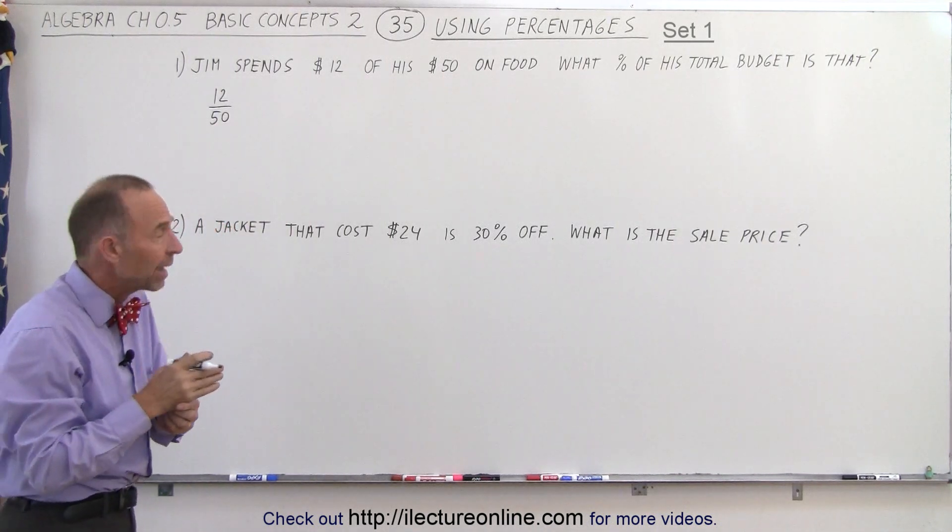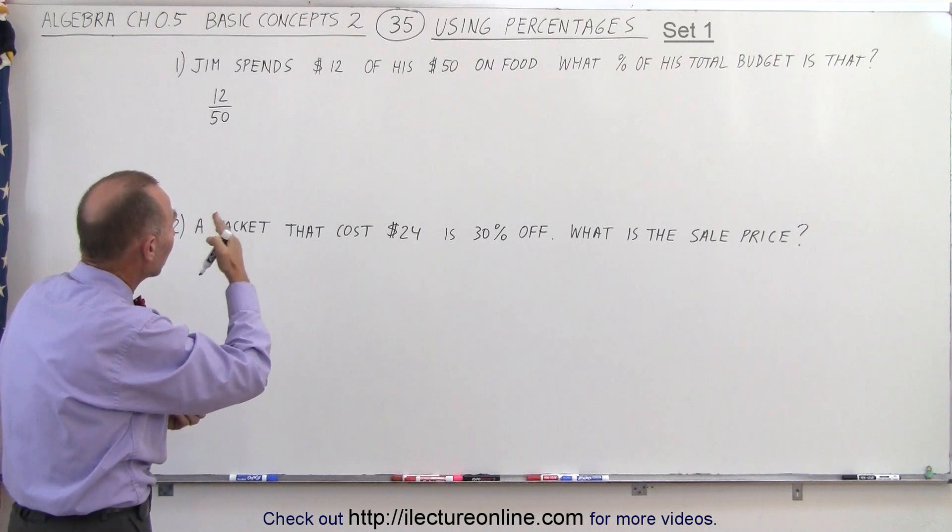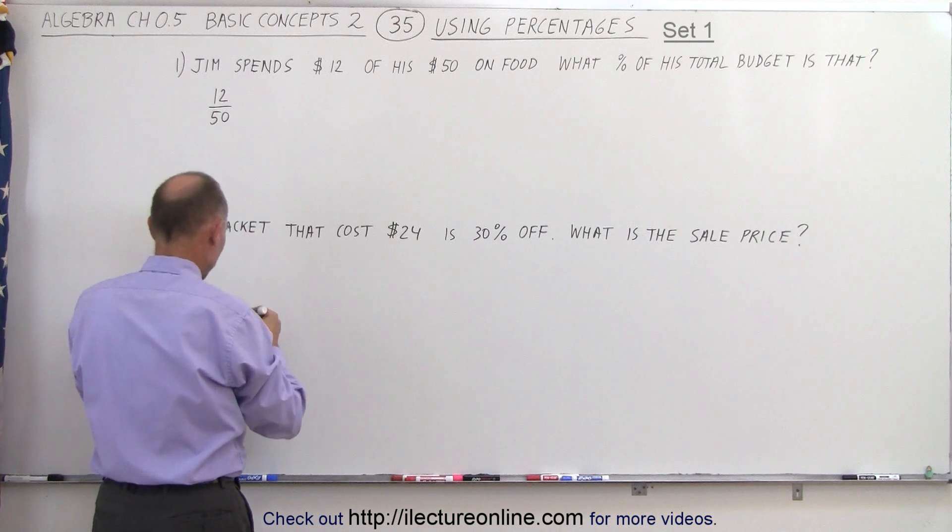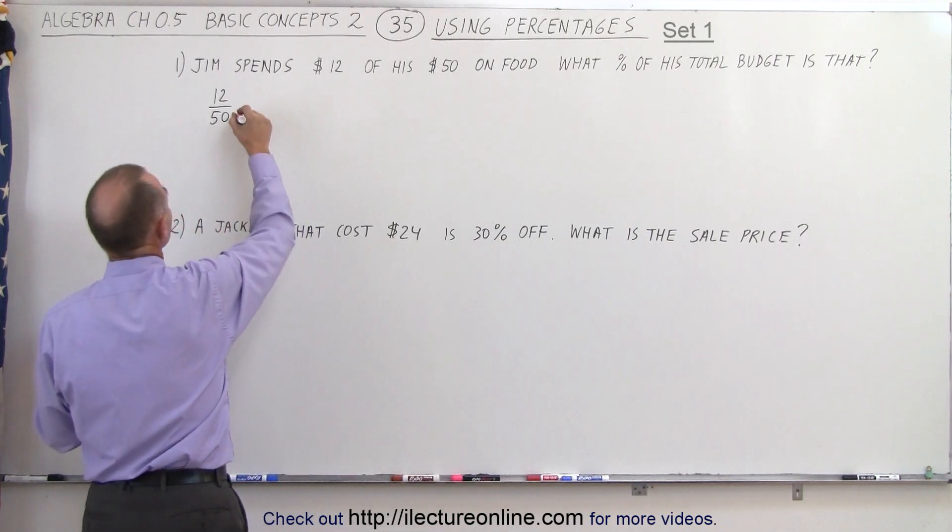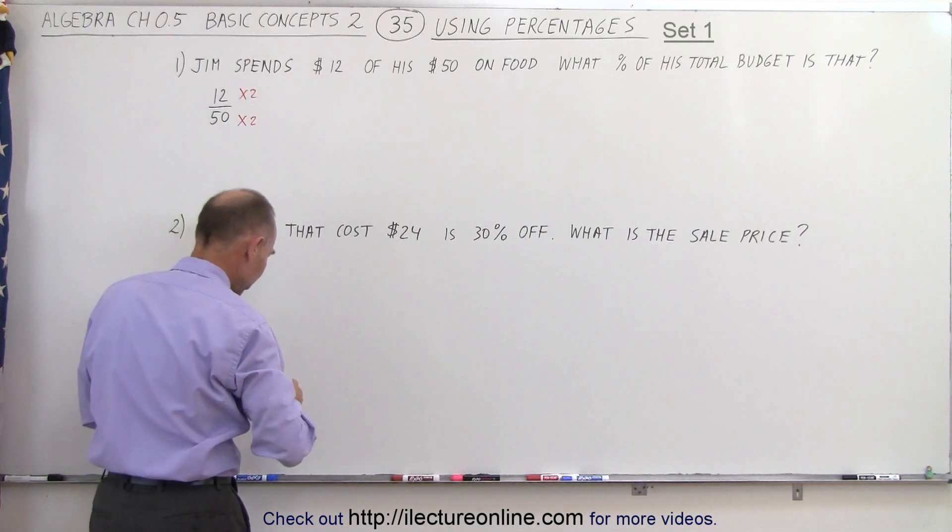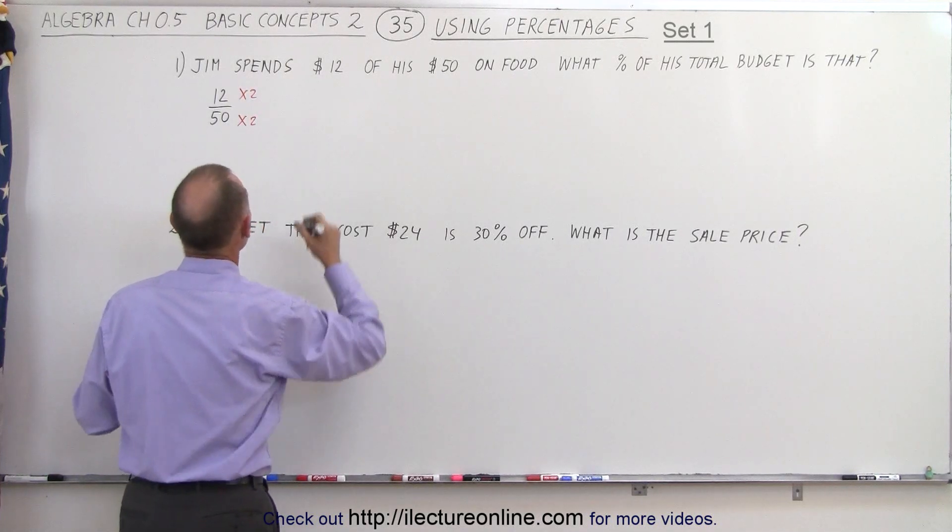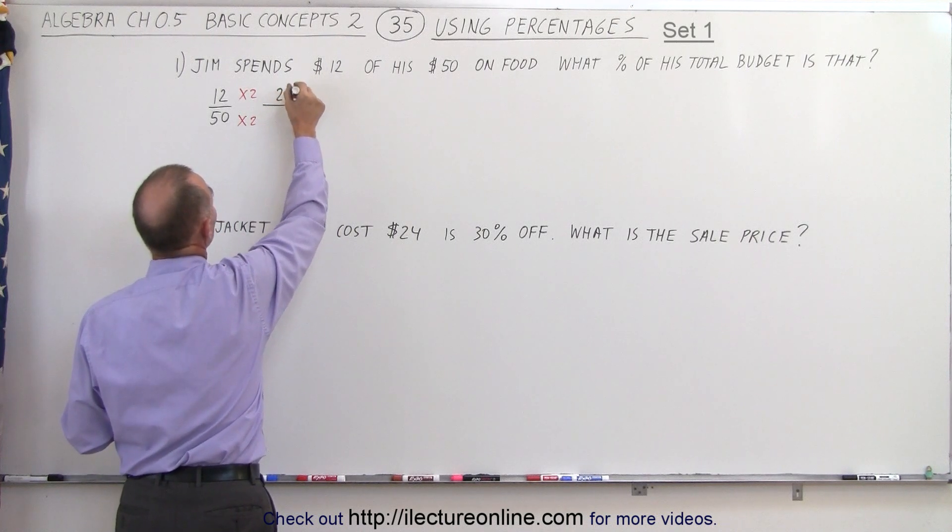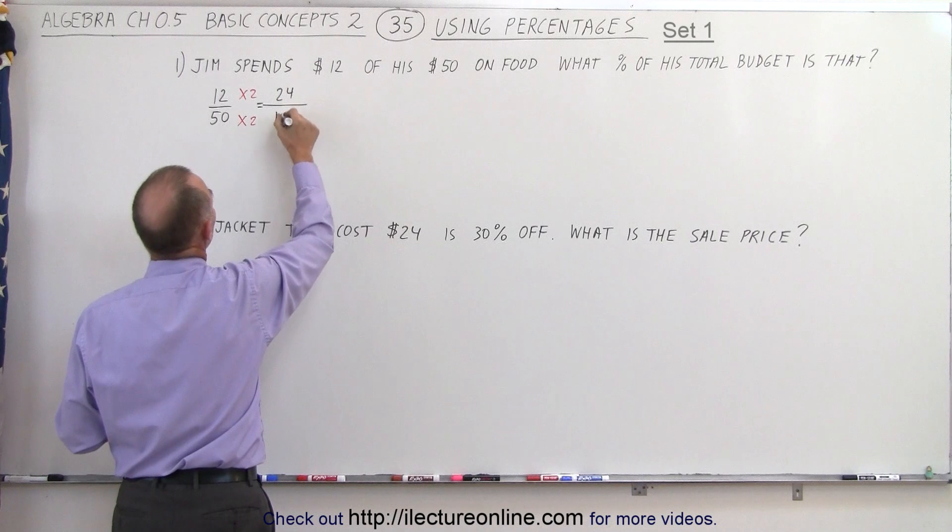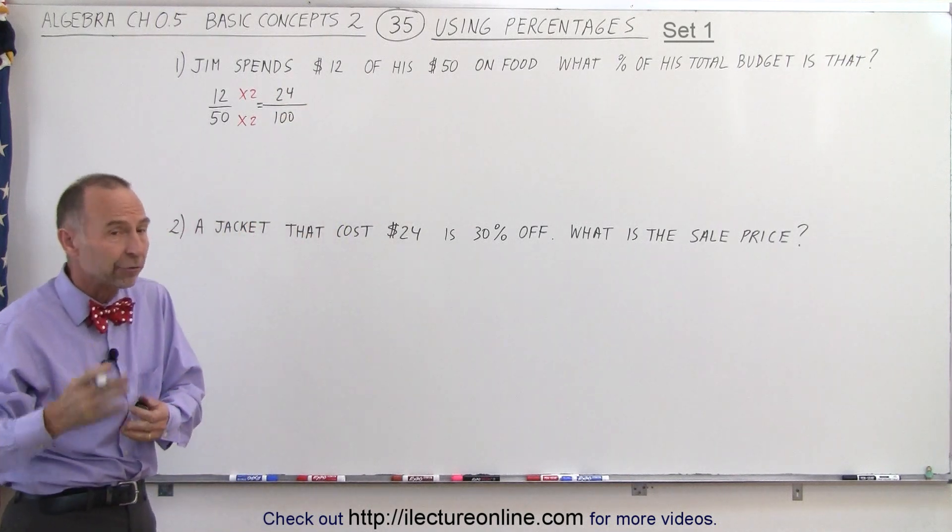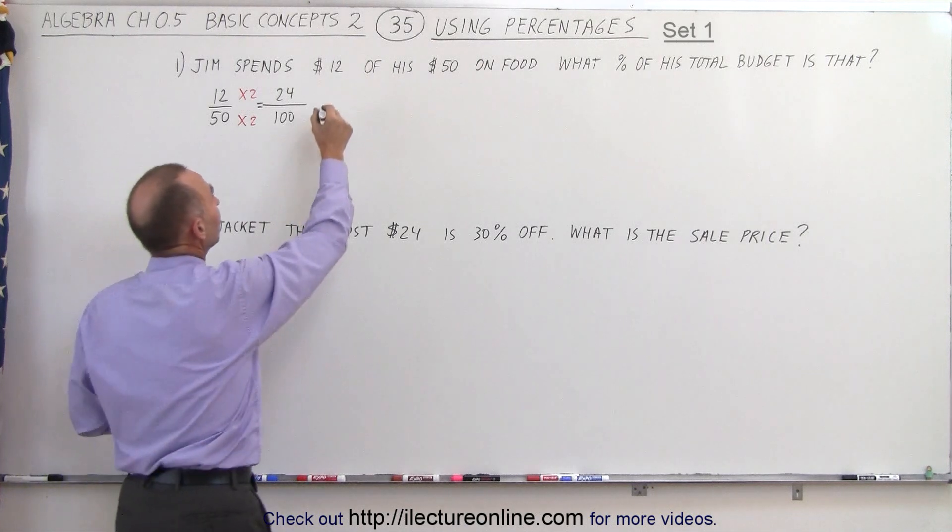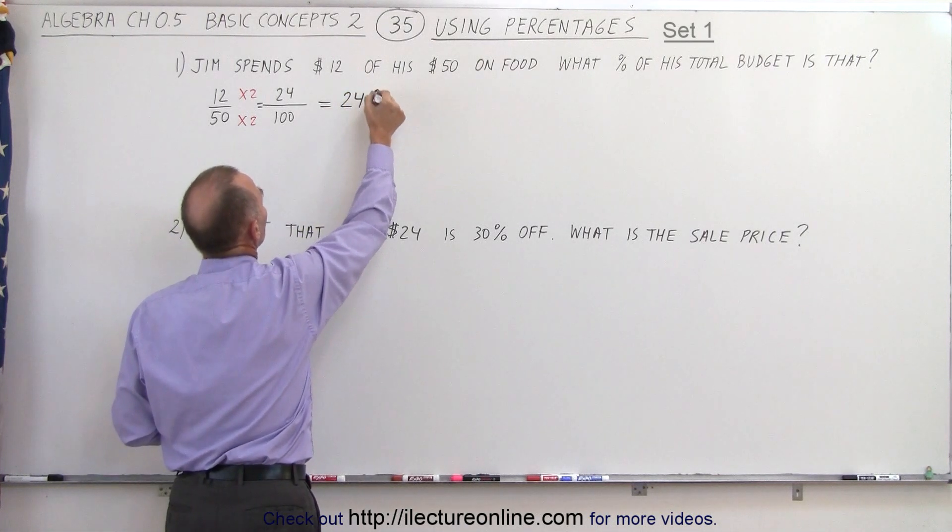Before we can turn that into a percent, we need to convert it to a fraction whose denominator is 100. If I multiply the denominator by 2 and multiply the numerator by 2, I get a fraction with 100 in the denominator. That gives me 24 over 100. Now that we have it over 100, we can convert it to a percent, because whatever number is over 100 equals that many percent: 24%.